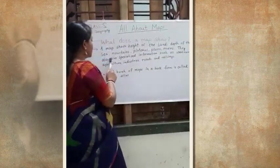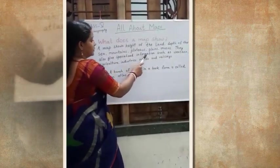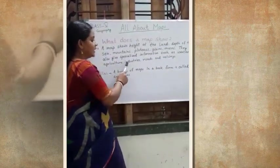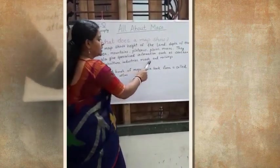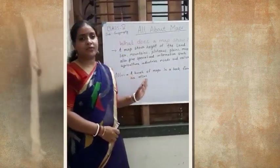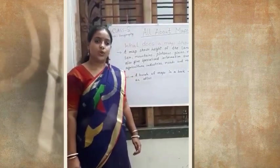They also give us specialized information such as weather, agriculture, industries, roads and railways. These are the different things which a map shows.